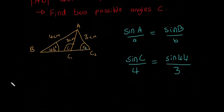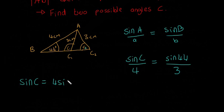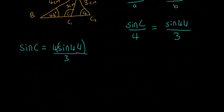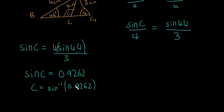So I'm going to multiply both sides by 4, so we're going to be left then with sine of C is going to be equal to 4 times sine 44 divided by 3. And then, that's just about sticking that into the calculator. Sine of C, then, is equal to 0.9262. And then, if we want to get our angle C, we get C is equal to the inverse sine 0.9262. And C is equal to about 67.9 degrees.